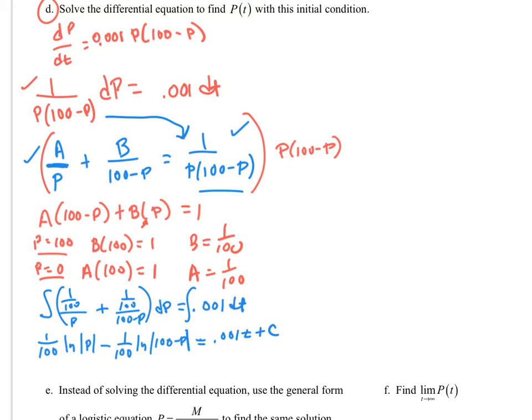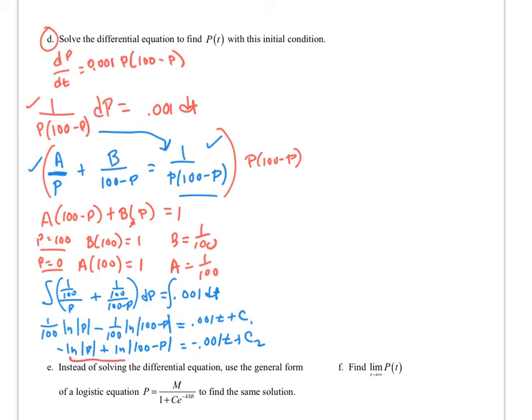And then we can go ahead. Why don't we multiply everything through by 100? And it works better, actually, if we multiply through by negative 100. So I'm going to make this term negative, this term positive, and then this term is going to be negative. And I guess I have a new constant. So I can go ahead and combine these two together using our rules of logarithm. So it's going to be ln of 100 minus p all over p is equal to negative 0.001t plus c2.